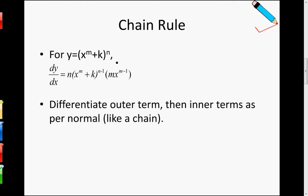Let me give you a brief guide to what Chain Rule is. So for Chain Rule, you have such a function: y equals to (x to the power of m plus k) to the power of n, where m, k, and n are all just integer constants. What you do is you treat this whole thing inside the brackets as a very big x.